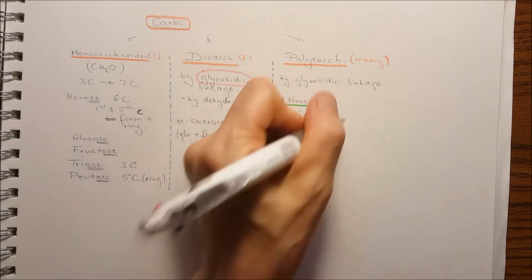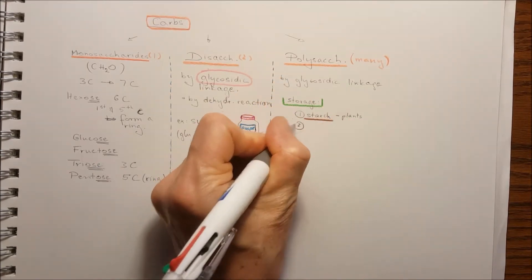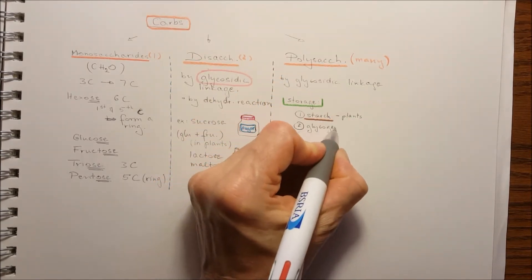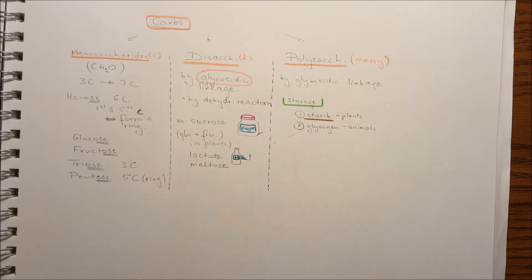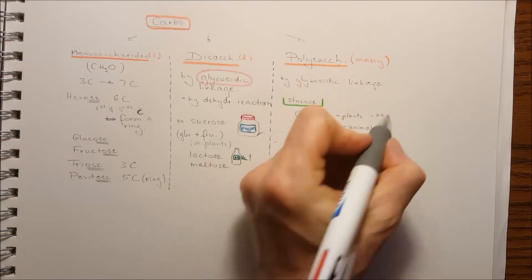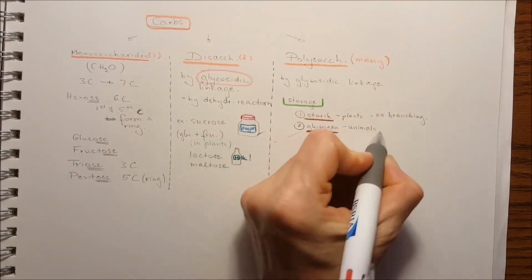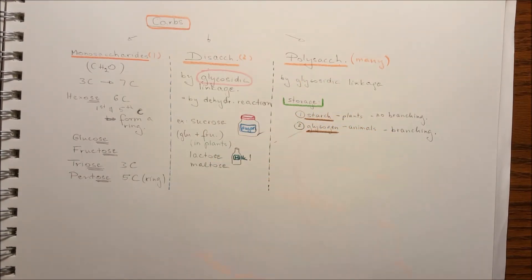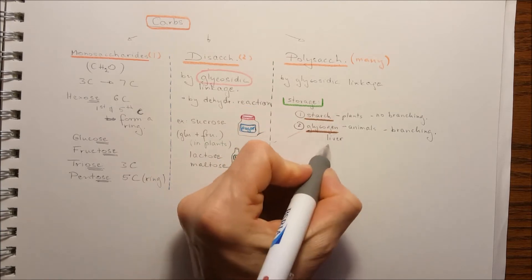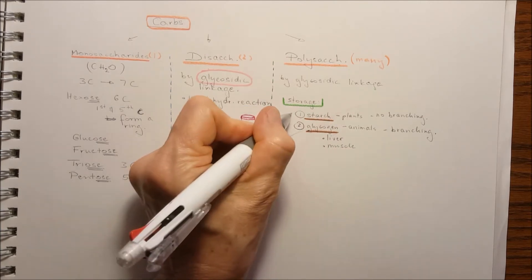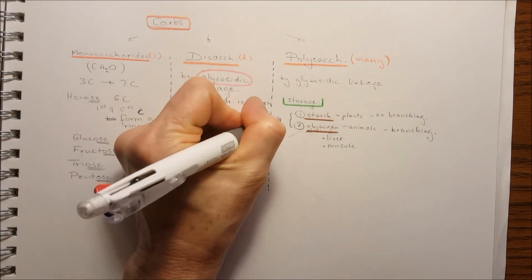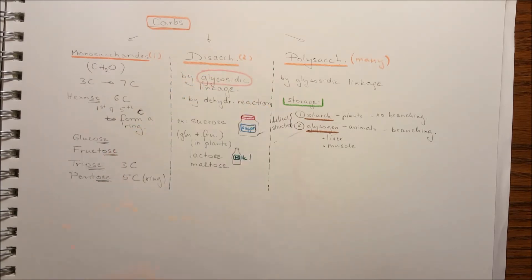Starch, you can find them in plants and the other one is glycogen, you can find it in animals. They store carbs. The starch is not branching and the glycogen shows a branching structure. Both of them helical structure, so they form spiral shape.